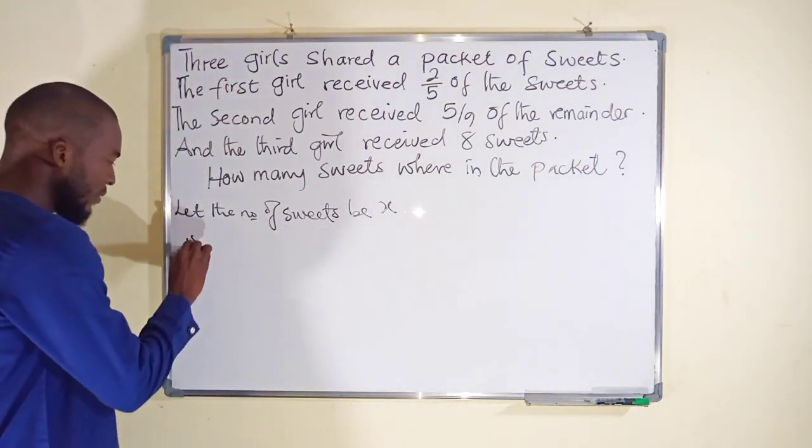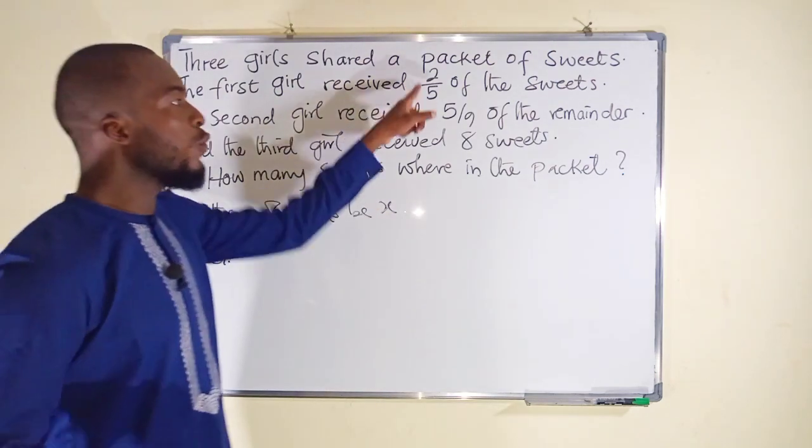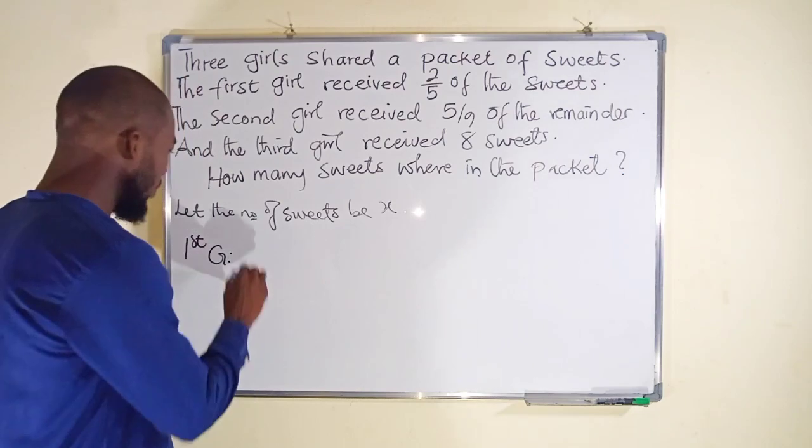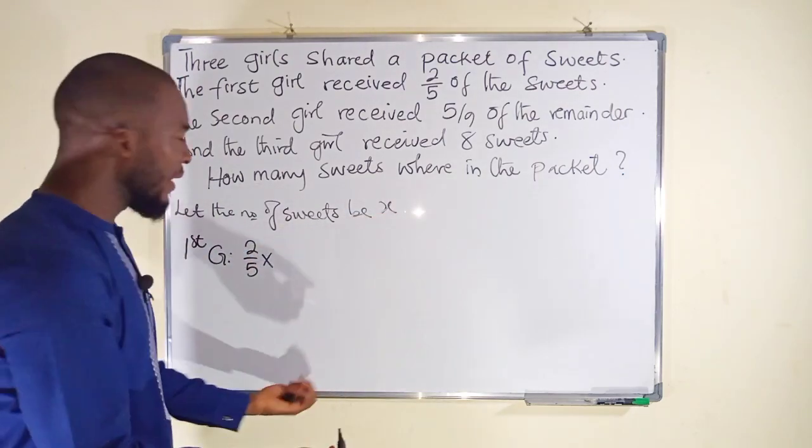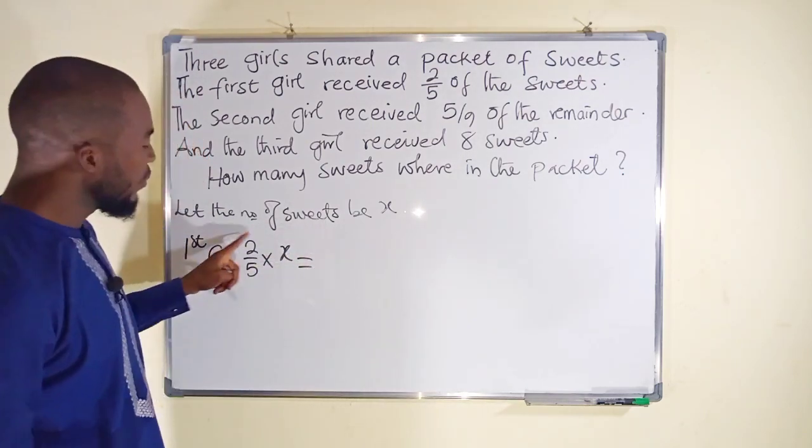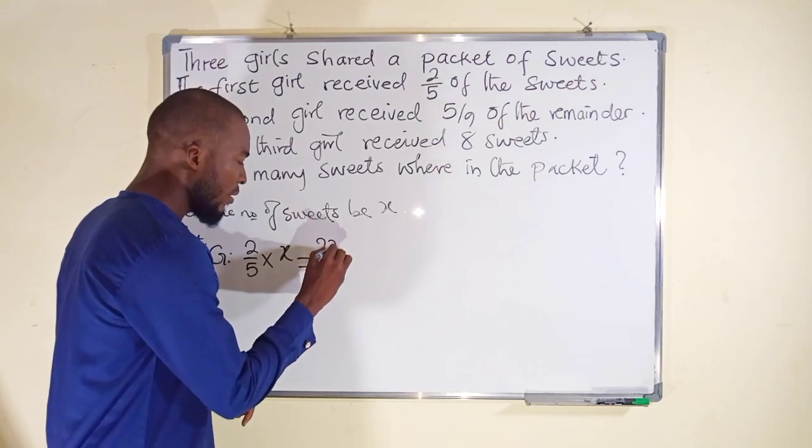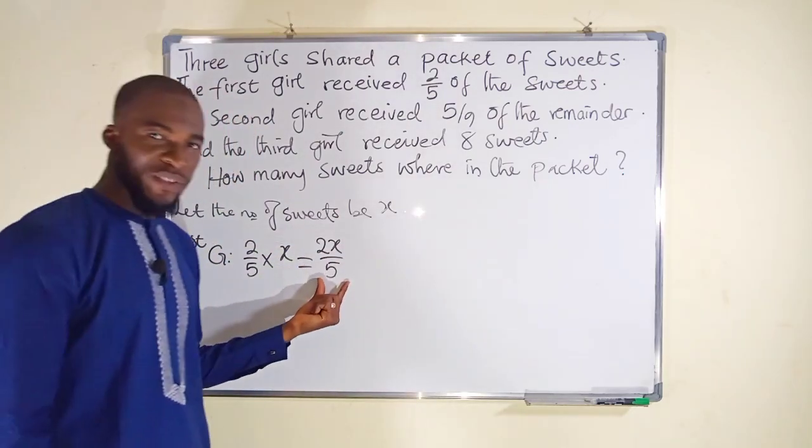The first girl received two over five of that sweets. Two over five, you know 'of' is multiplication, and the sweets has been declared with x. If you simplify this, two times x is 2x divided by 5. So this is the share of the first girl.